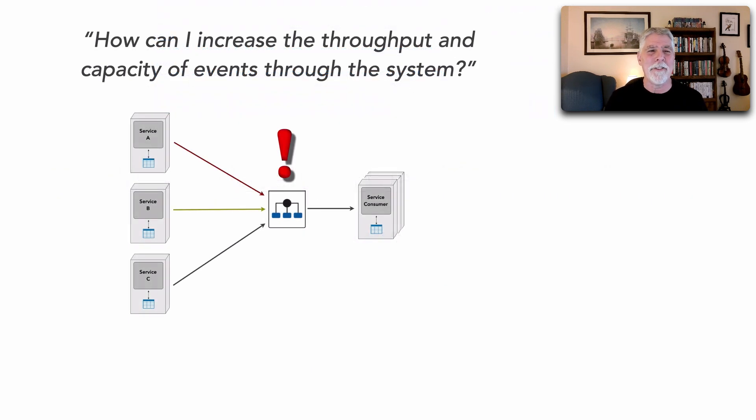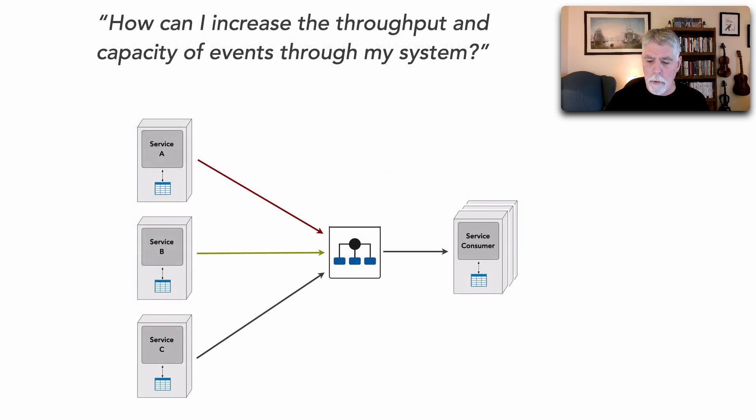Well in this lesson I really want to talk about techniques for increasing the overall throughput and capacity of events or messages through a system. So what we have here is a regular message broker, something like RabbitMQ, ActiveMQ, maybe Solace or Memphis, or a bunch of others like Blaze, WSO2. It's basically a message broker.